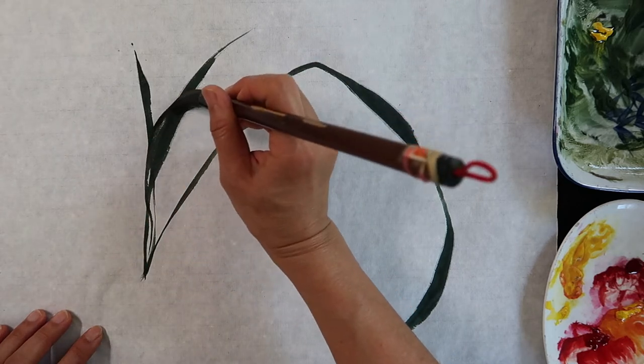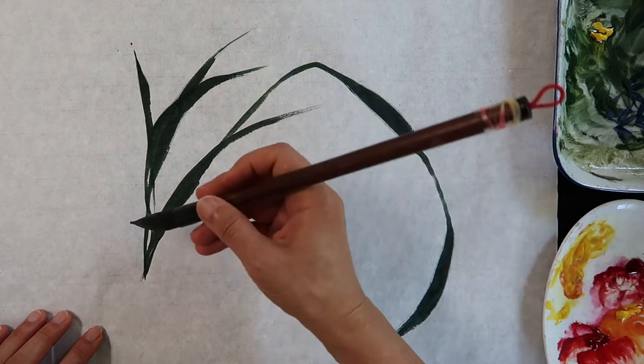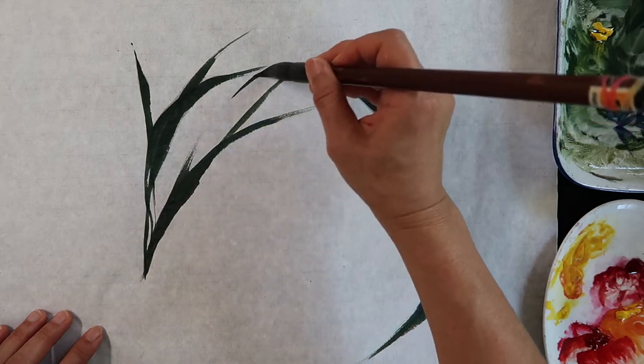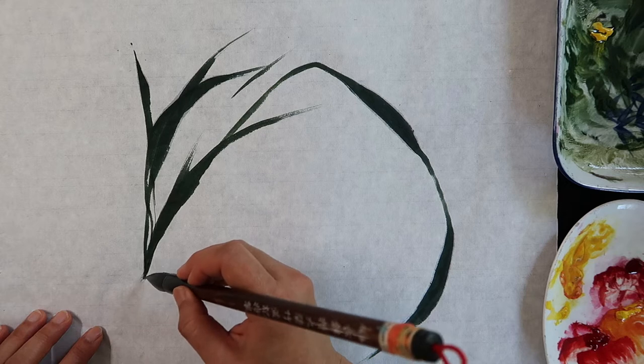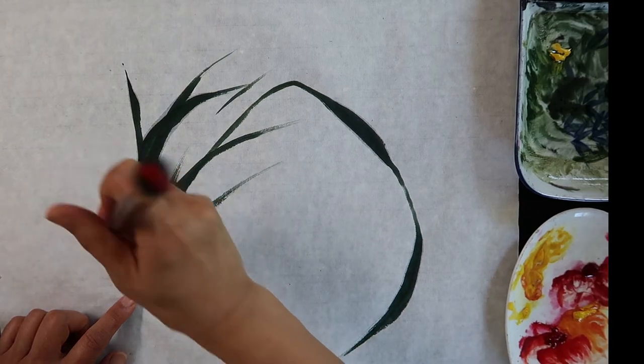To draw the leaves, the brush needs to absorb enough color. Touch down lightly and put pressure to broaden the stroke. Lift the brush up at the end.